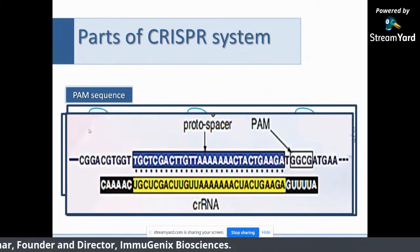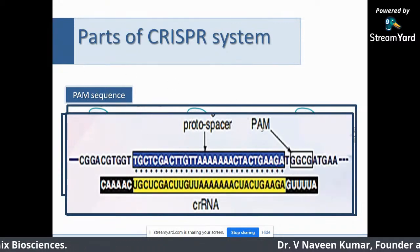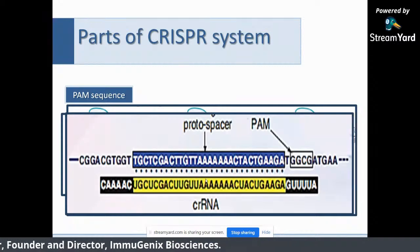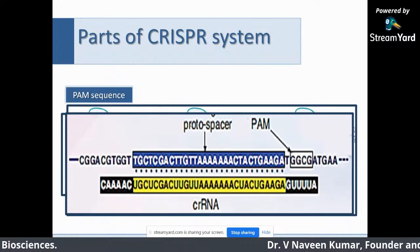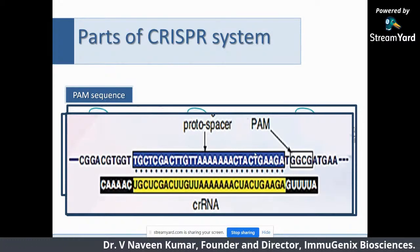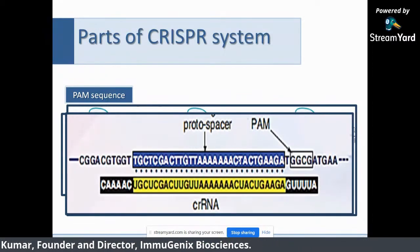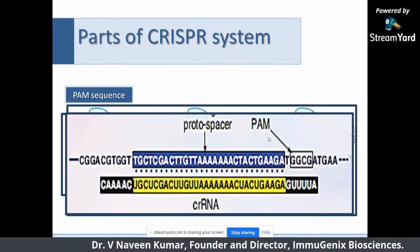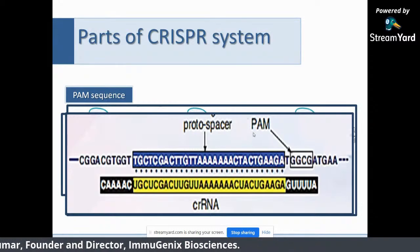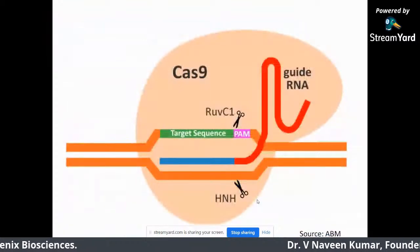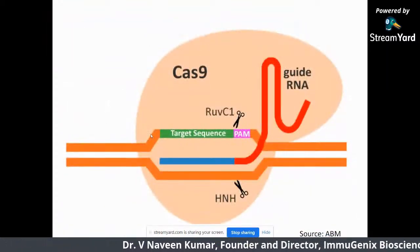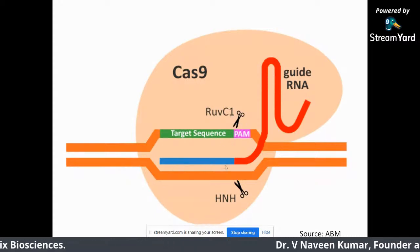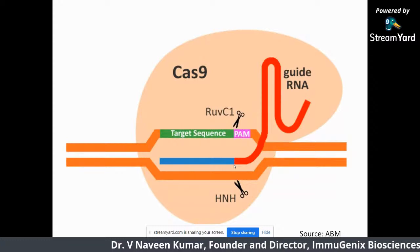PAM sequences — Protospacer Adjacent Motif — are very important. The protospacer is the origin where the spacer came from in the phage genome. The spacers go and bind to the protospacer adjacent to the PAM sequence. Only targets recognized based on PAM sequences will be targeted. In the case of Cas9 from Streptococcus pyogenes, the PAM sequence is three bases: NGG — where N can be any nucleotide. The Cas enzyme is bound to a guide RNA, which is a 20 base-pair nucleotide. Once it has a complementary match to the target adjacent to the PAM sequence, it forms a double-strand nick.